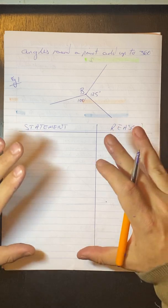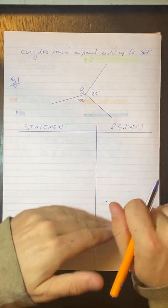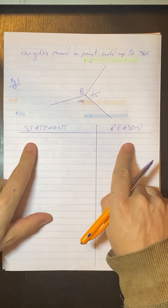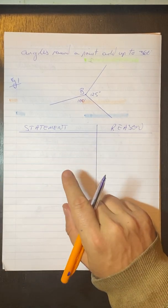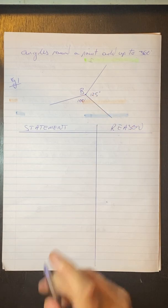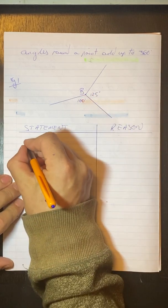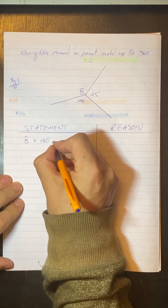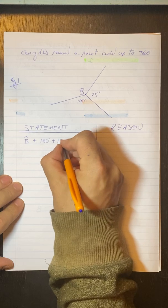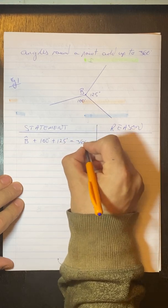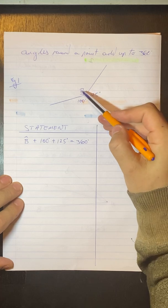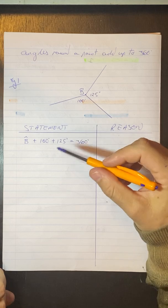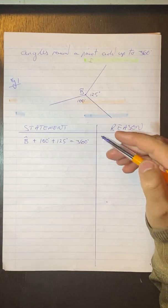Now remember with this whole geometry section, you have a statement column and a reason column. So whatever you state here, you must give a reason why. So we want to solve for angle B here. So I know that B plus 100 plus 125 must be equal to 360. So what I've done there is I've taken this angle, this angle, this angle, worked around like that, added them together, and that must be equal to 360 degrees.